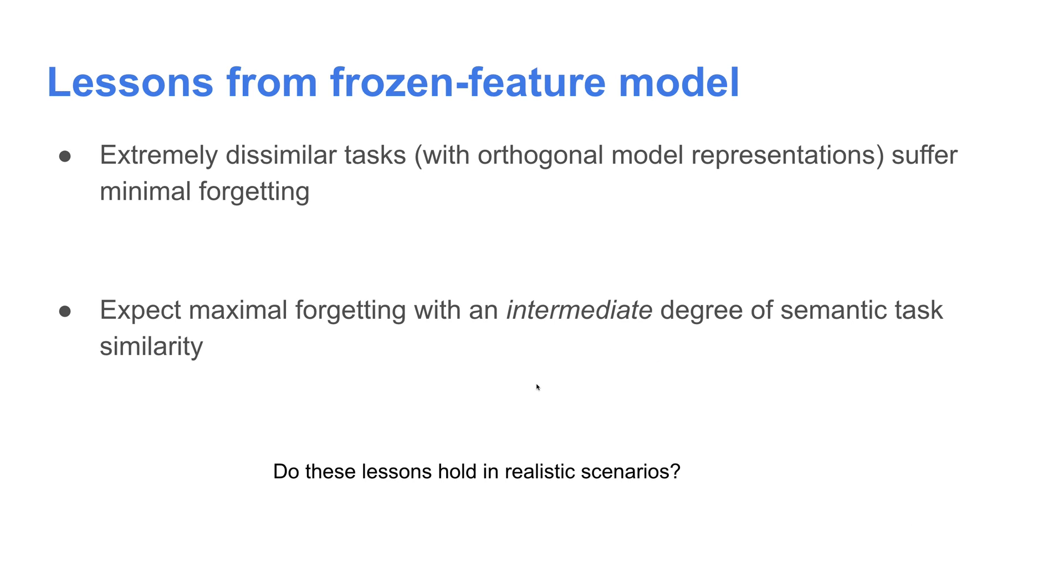We have two main takeaways from this frozen feature model. First, extremely dissimilar tasks, meaning orthogonal model representations, don't suffer much forgetting at all. So when would we expect to see forgetting? We'd expect to see it not from orthogonal tasks, nor from nearly identical tasks, but from task sequences which exhibit an intermediate degree of similarity.